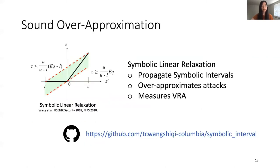There are many types of sound over-approximation methods to verify robustness of neural network models. In this paper, we use the symbolic linear relaxation method. On the high level, given an input bound of a data point, we derive an over-estimated output bound, which tells us whether a data point is always correctly classified given the input bound. This over-approximates potential attacks and can be used to measure VRA of trained classifiers.